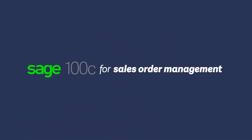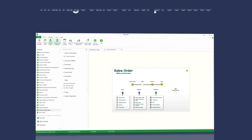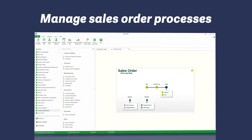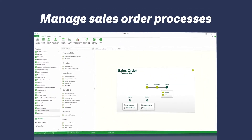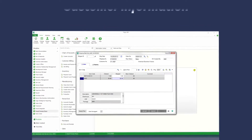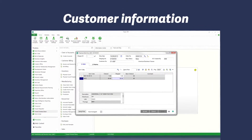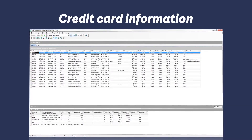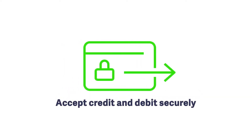Whether you're online or on-site with a customer, you manage sales order processes with Sage 100C. Find the availability of specific units, item and quantity pricing, customer account information, costs, and credit card information. You will even be able to accept credit cards and debit cards securely with Sage Payment Solutions integrated with Sage 100C.